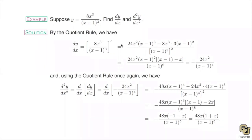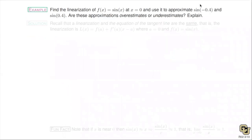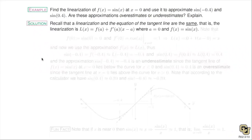Here I want to do this linearization problem. The problem says: find the linearization of f(x) = sin(x) at x = 0, and use it to approximate sin(−0.4) and sin(0.4) radians. It also asks whether these approximations are overestimates or underestimates. One key thing: linearizations and tangent lines are the same thing. However you want to think about it, it's imperative that you know the equation of a tangent line.